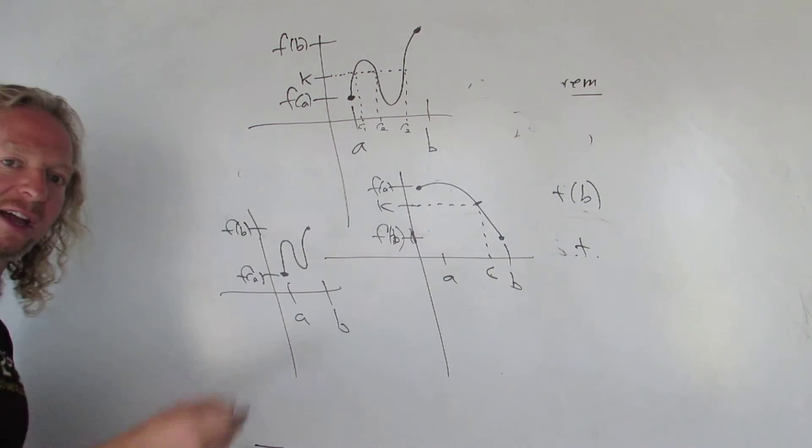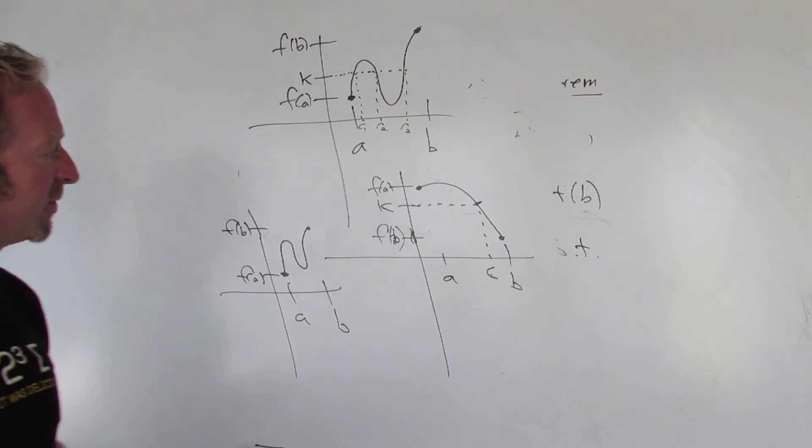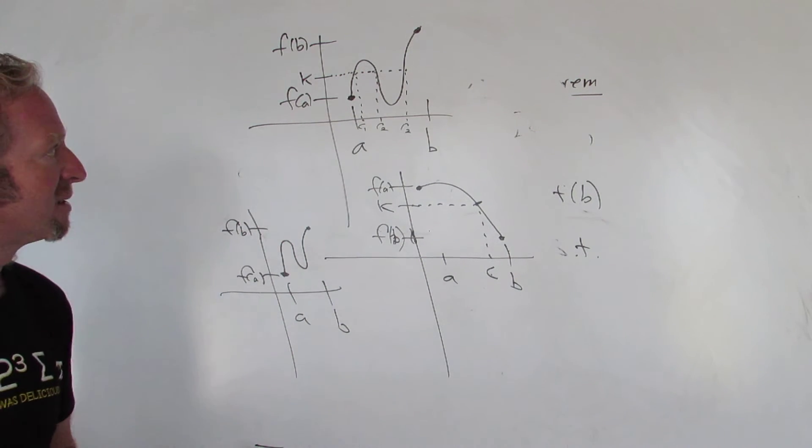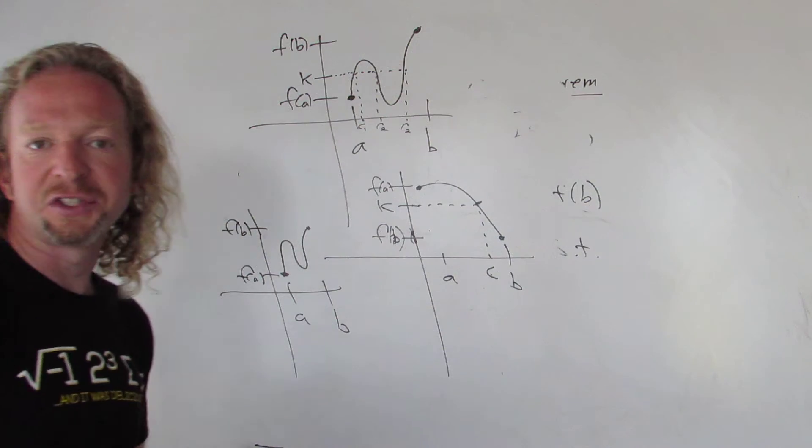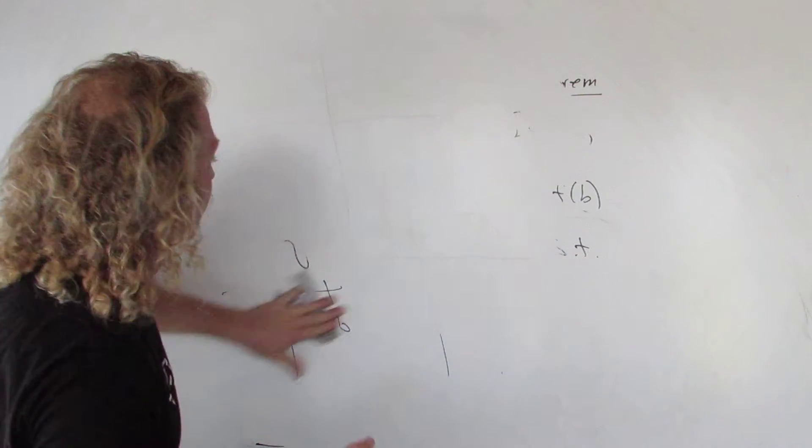It takes on all intermediate values between those numbers. So the typical problem you would do in a math class with IVT is finding C. Let's do a simple example.